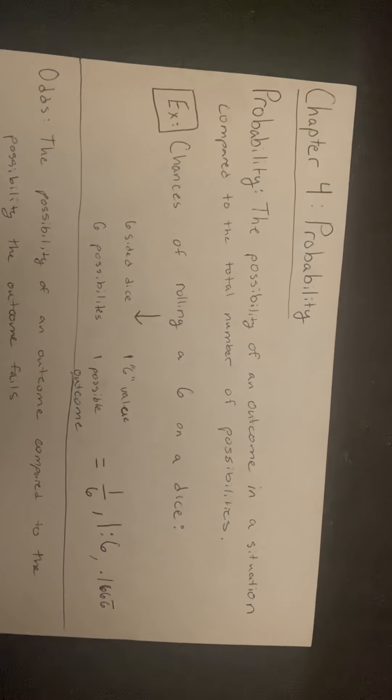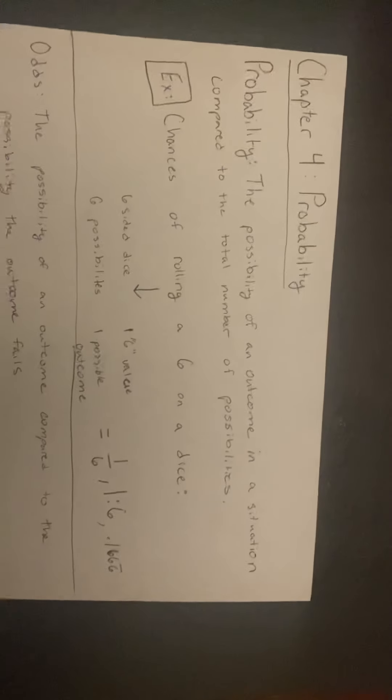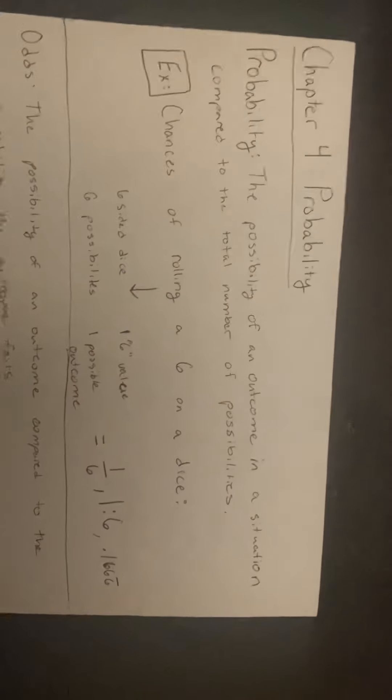These are three different ways to write a probability: one is a fraction, one is a ratio, and one is a decimal.